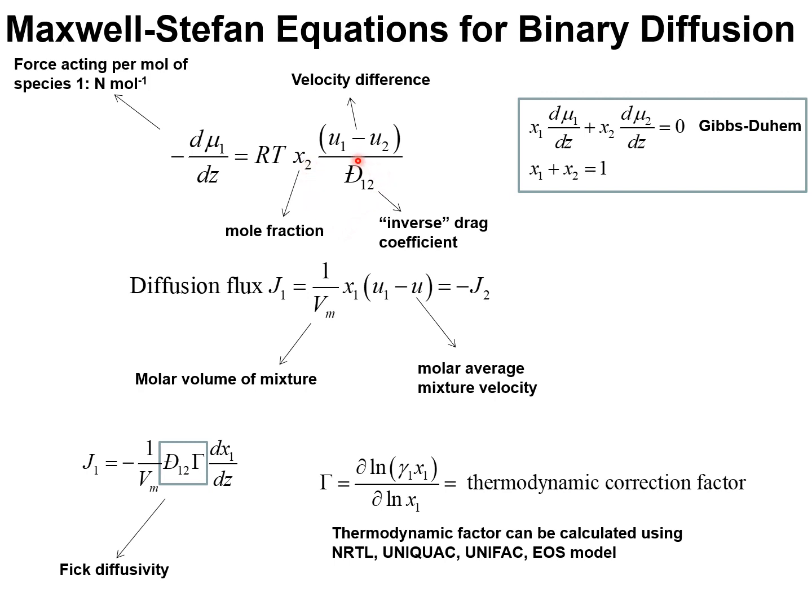The physical significance of the Maxwell-Stefan diffusivity, where we use the symbol D with a line through it, is that it represents an inverse drag coefficient. The force acting per mole of species 1 is the negative of the gradient of the chemical potential with the units Newtons per mole.